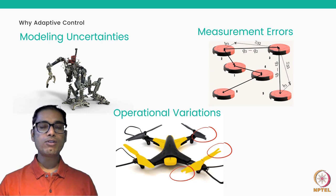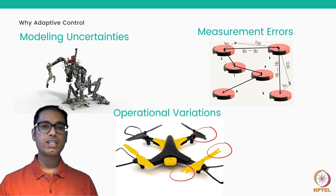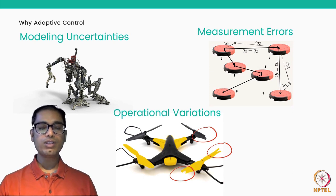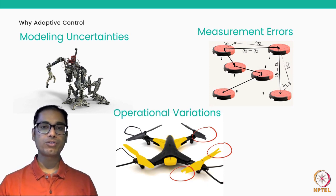The next source of uncertainty comes from the deployment of the system. When you actually start operating the system, there may be sensors measuring certain variables and there may be errors in these measurements. To compensate for these errors you need a special control algorithm, which is where adaptive control comes in.